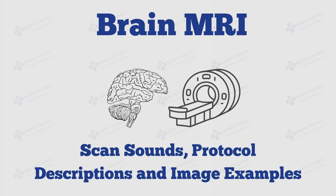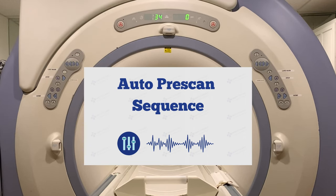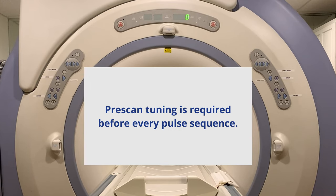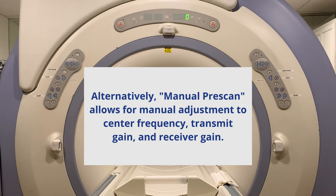Now let's get started with the first pulse sequence you hear during a brain MRI scan, the auto pre-scan tuning sequence. Auto pre-scan tuning is performed prior to each scan series to determine optimal center frequency, RF output, and offset values. Images are not produced during the pre-scan tuning phase.